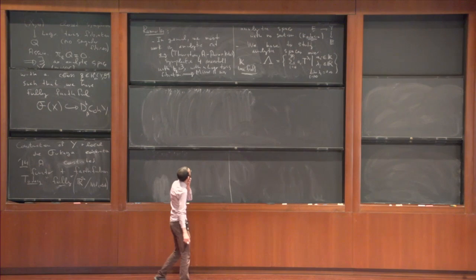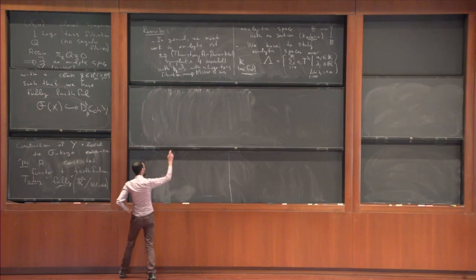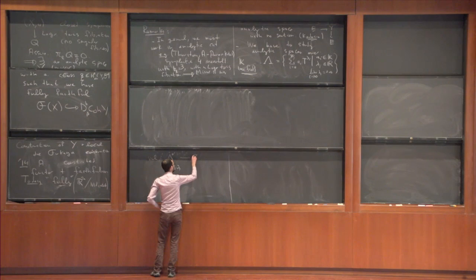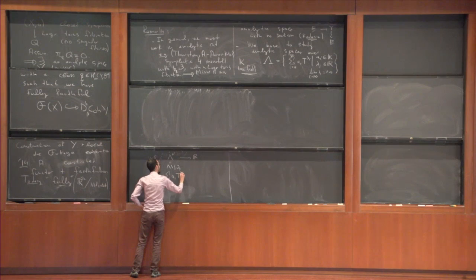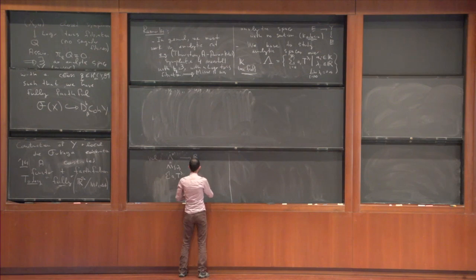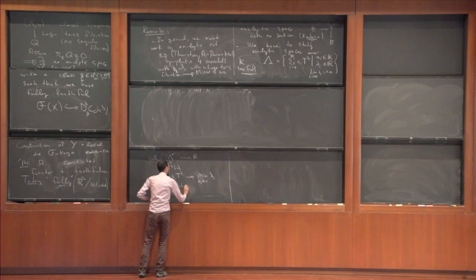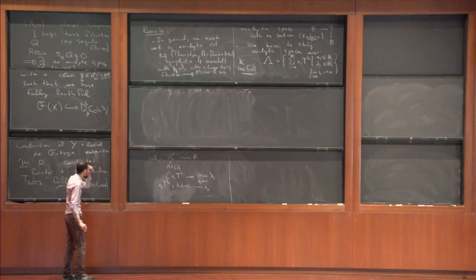What do I mean by analytic geometry over this field? That field is equipped with a valuation: λ* is the non-zero elements mapping to ℝ. This valuation takes the sum of aᵢ t^{λᵢ} to λ₀, which is the minimum over aᵢ non-zero of λᵢ. The way I normally think about it: I write this thing as t^{λ₀} times (a₀ + t^{λ} plus higher order) and extract λ₀.